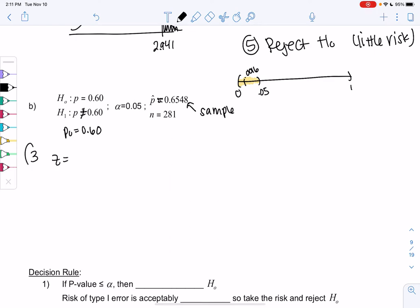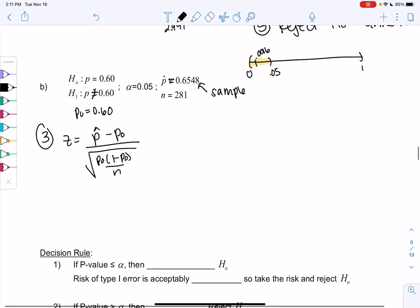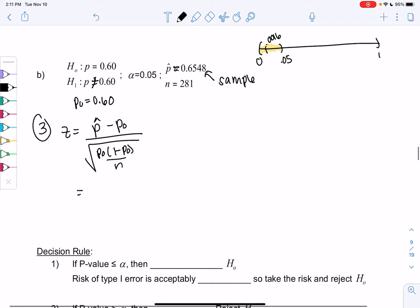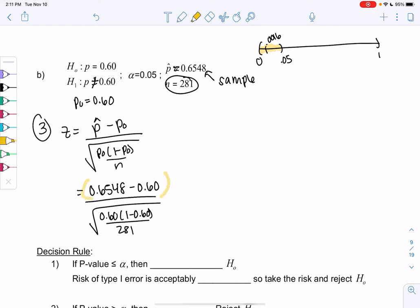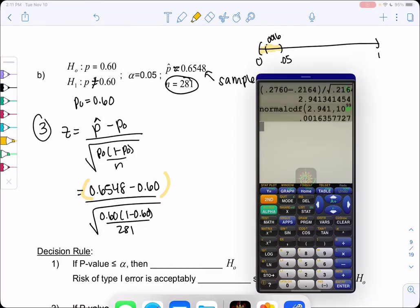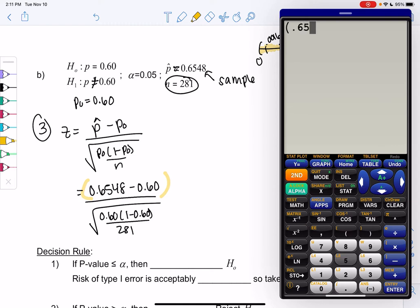So we're going to go ahead and plug into that same formula. Z is p hat minus p0 all over p0, 1 minus p0 over n. So we get my sample 0.6548 minus 0.60 all over all this. It's 0.60, 1 minus 0.60 over 281, all inside a square root. Go ahead and type that. Make sure you put parentheses on top or you do it in more than one step.